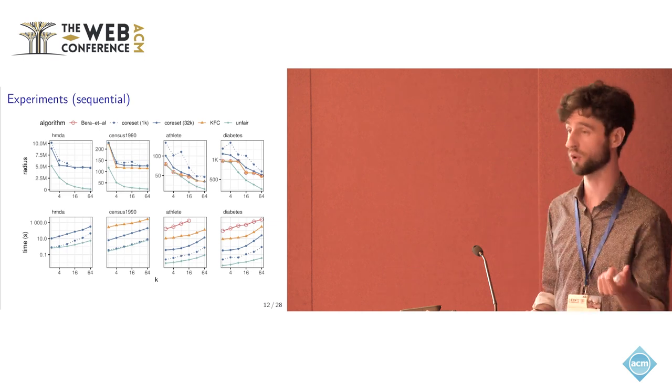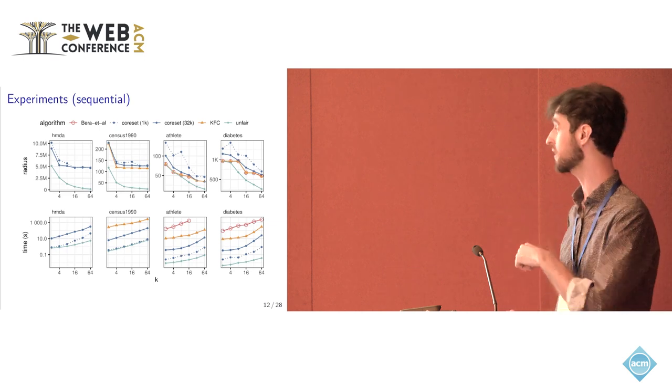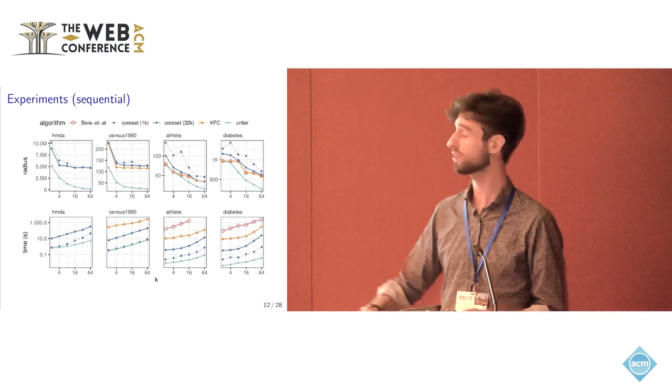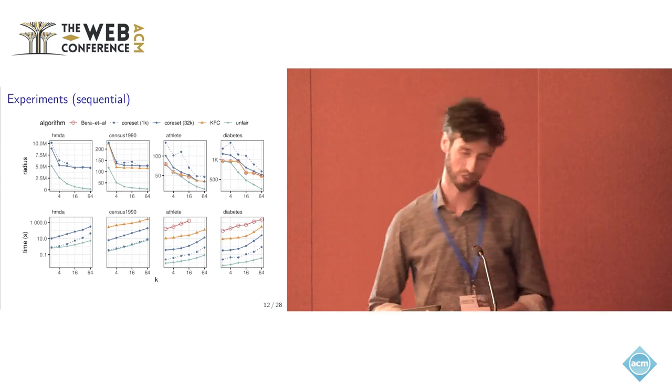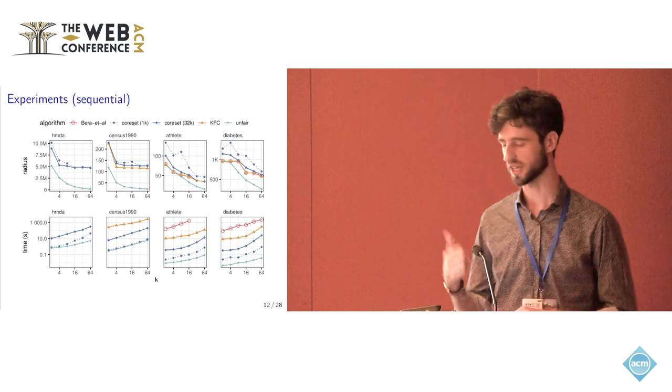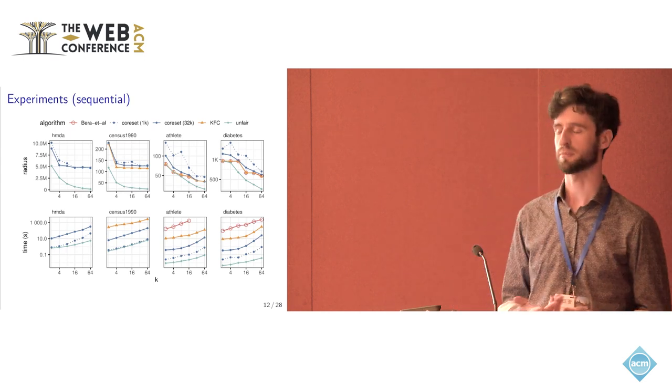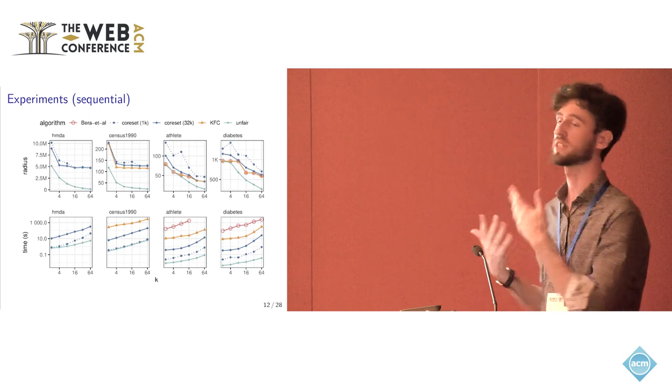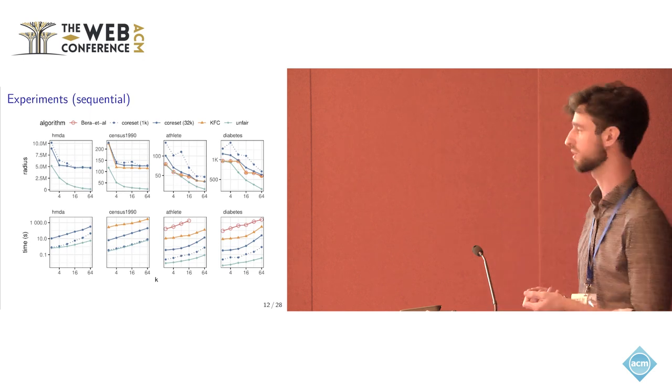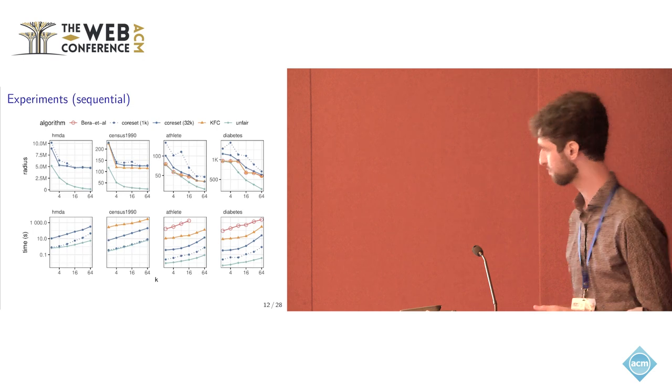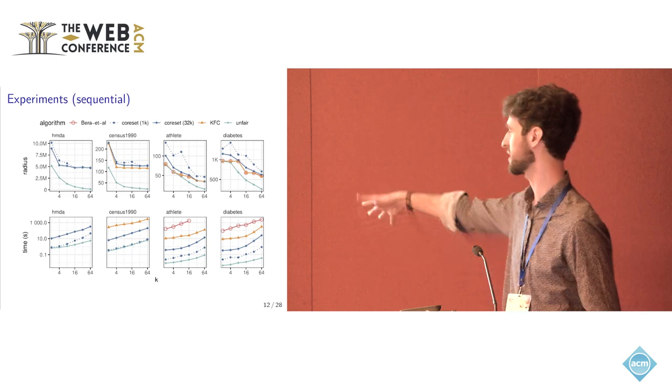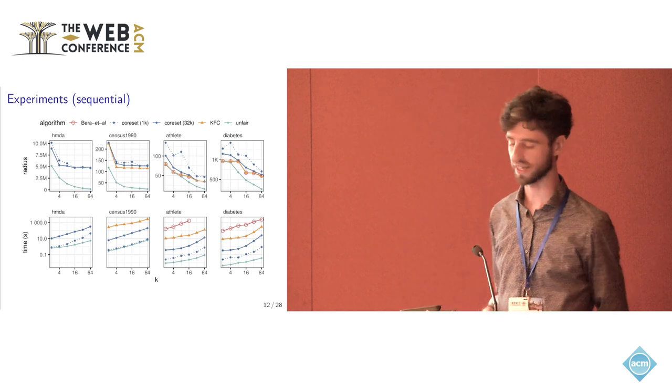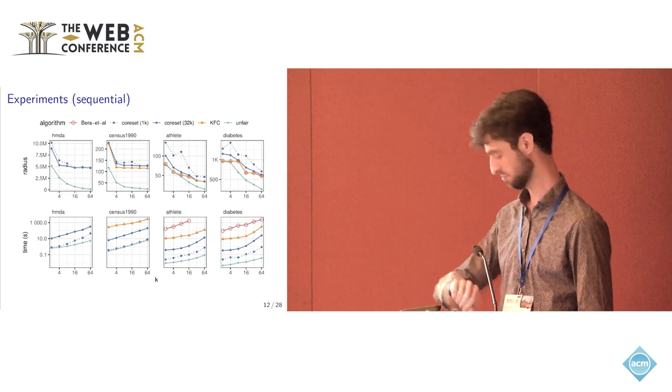And what we can see is basically that we can get a very close solution in terms of quality compared to the state of the art but in much less time. We gain always at least one order of magnitude. And on the leftmost plot, this HMDA dataset has about 16 million points and the baselines all timed out, so we weren't able to compute the solution with the baselines. And our running time is kind of comparable to the greedy unfair algorithm.